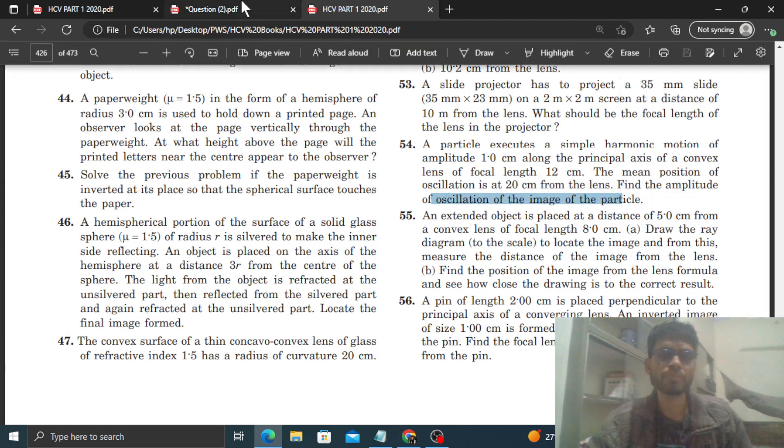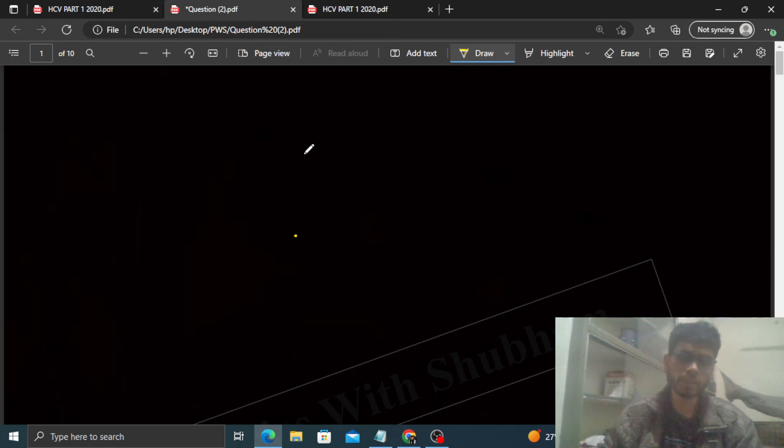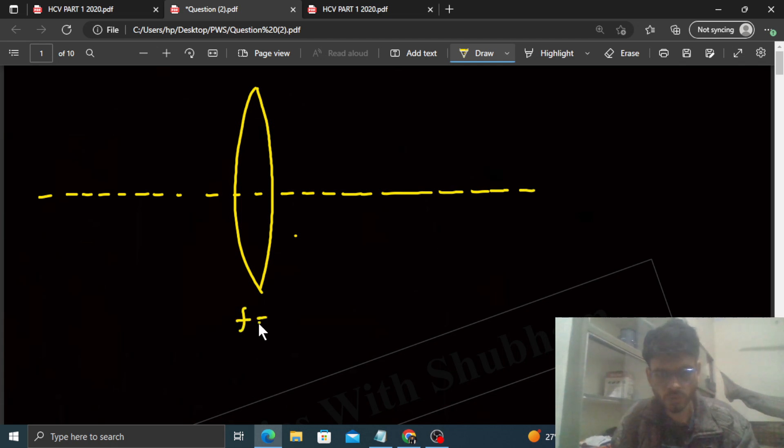Okay, so what is given? We have a convex lens, something like this - this is the convex lens. And this is its principal axis, something like this. And this convex lens has a focal length of 12 centimeter.